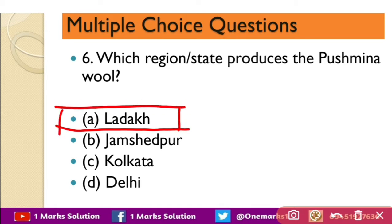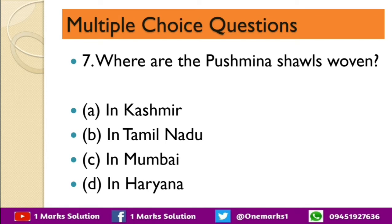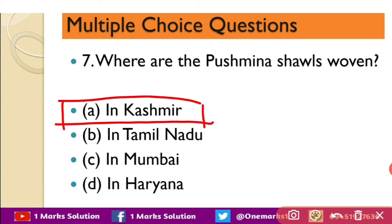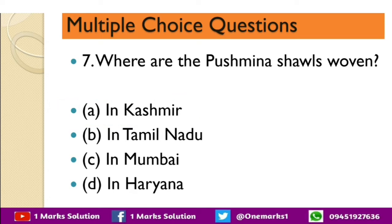If the option Jammu and Kashmir is also given, then the correct option would be Jammu and Kashmir. Next question: where is Pashmina wool woven? The options are Kashmir, Tamil Nadu, Mumbai, and Haryana. The correct option is Kashmir.